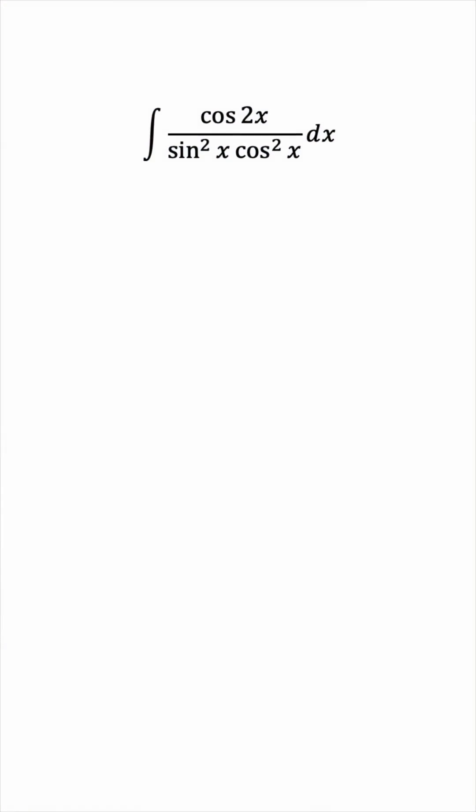Instead of using the double angle identity for cosine, we could have used the one for sine. The denominator is basically the square of sine x cosine x, and we know that sine 2x is identical to 2 sine x cosine x. So the product in the denominator is equivalent to one half of sine of the double angle.